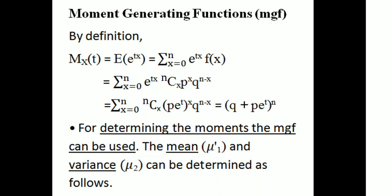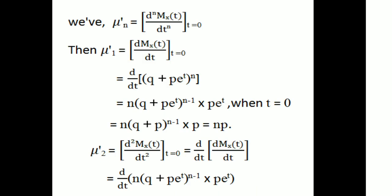The mean mu₁' and variance mu₂ can be determined using the moment generating function. M_X(t) equals q plus p e raised to t, all raised to n. The general formula is that mu_n' is equal to the nth derivative of M_X(t) with respect to t, evaluated at t equal to 0. From this we can find mu₁', mu₂', and so on.